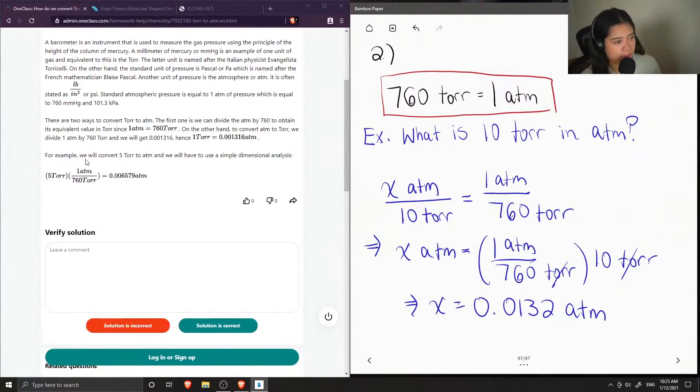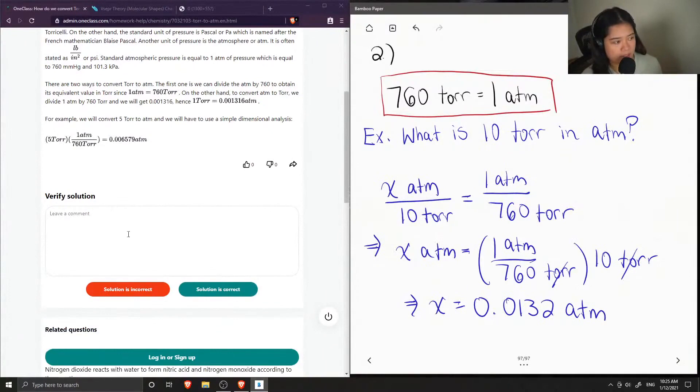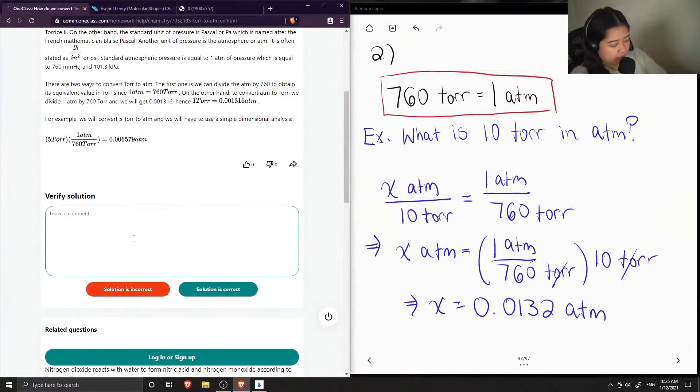For example, we will convert 5 TOR to ATM, and we will have to use a simple dimensional analysis. So for their example, they had 5 TOR, and when you divide it by 760, you get your answer in ATM. So this solution is correct.